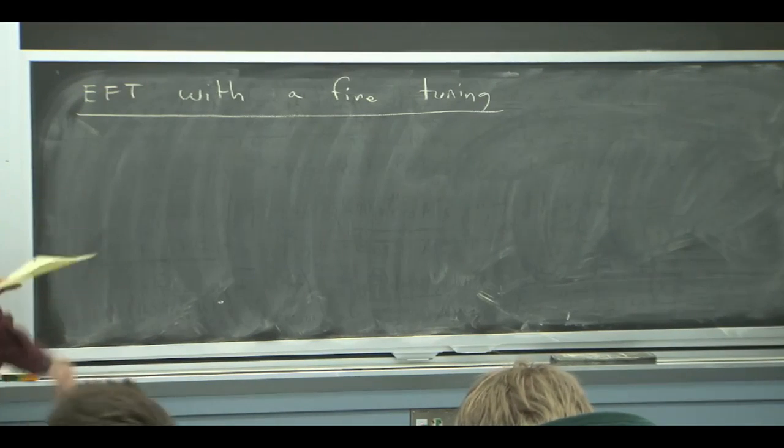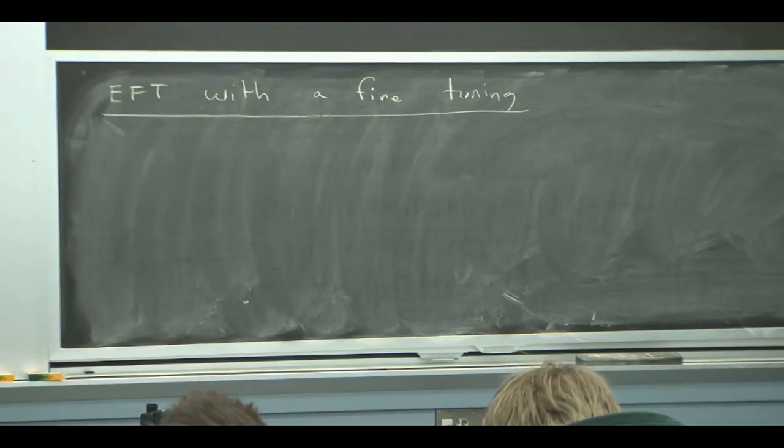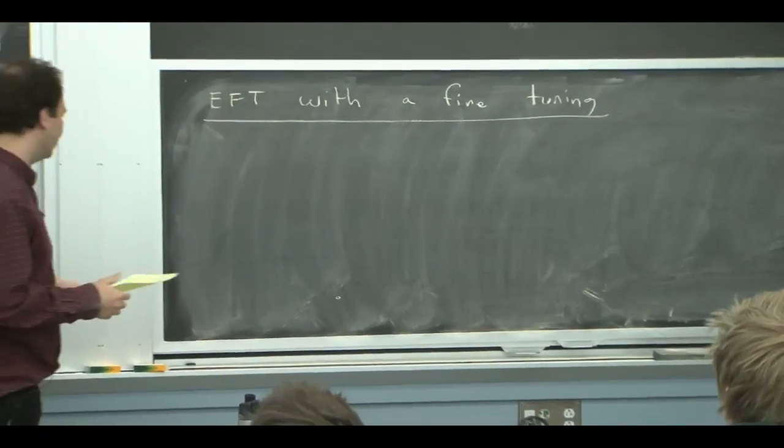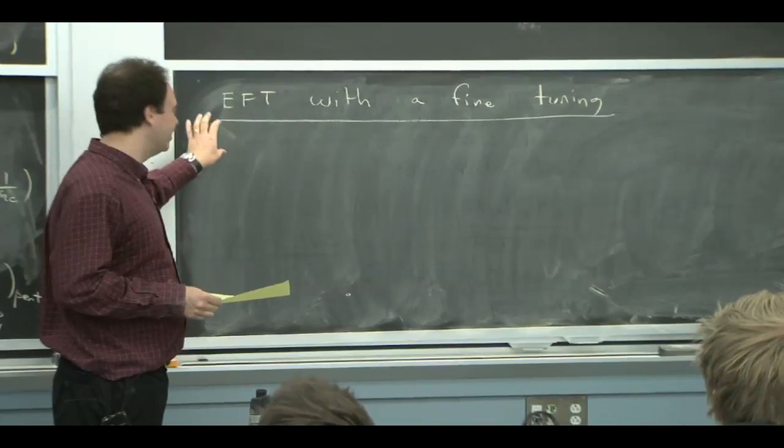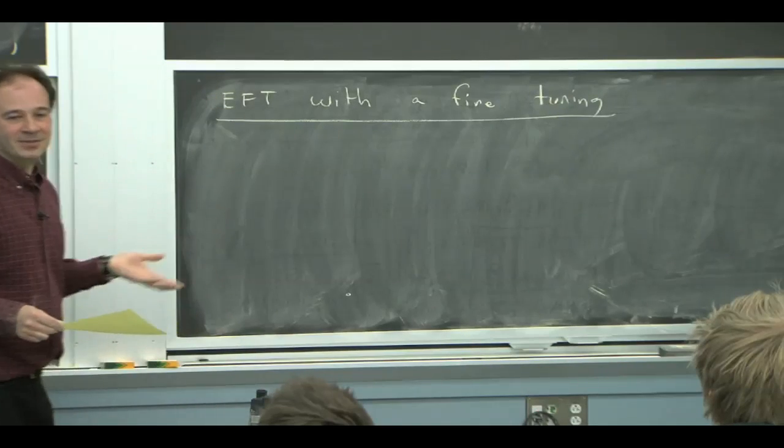Usually, the whole notion of effective field theory is against the idea that there should be a fine tuning, because you're making dimensional analysis estimates of things. If there's a fine tuning, that means your dimensional analysis failed.